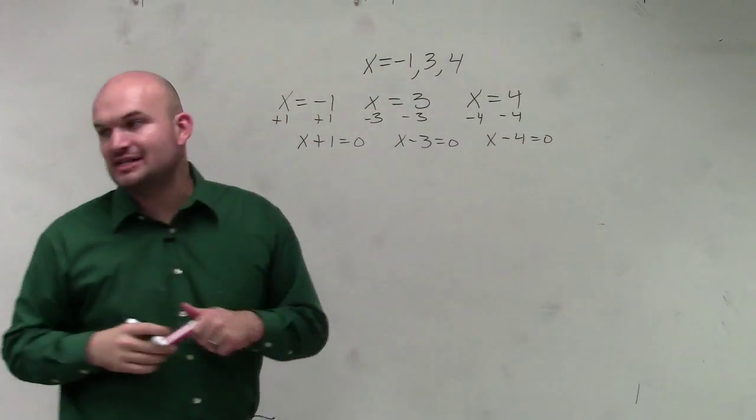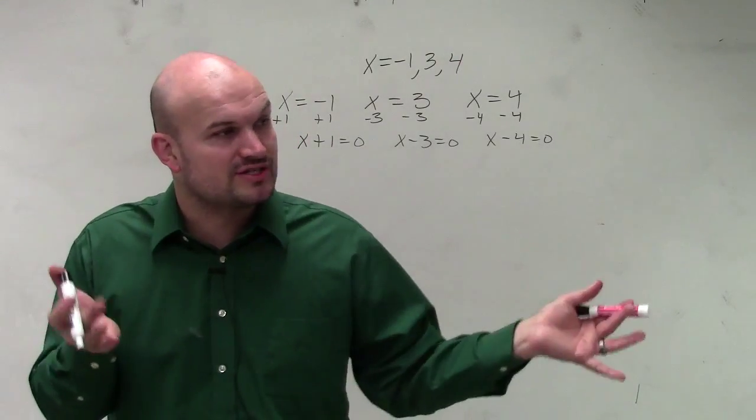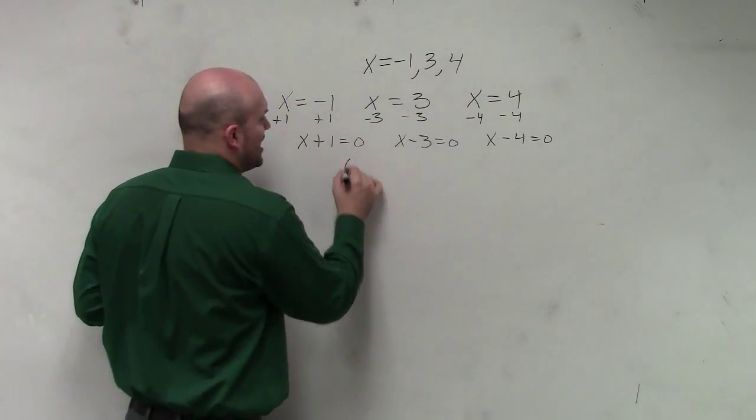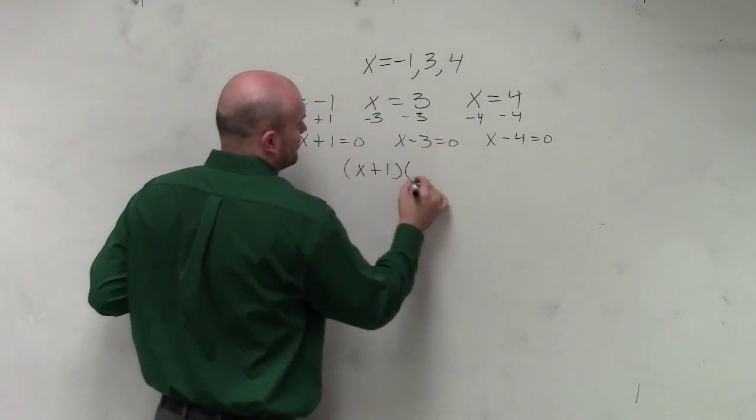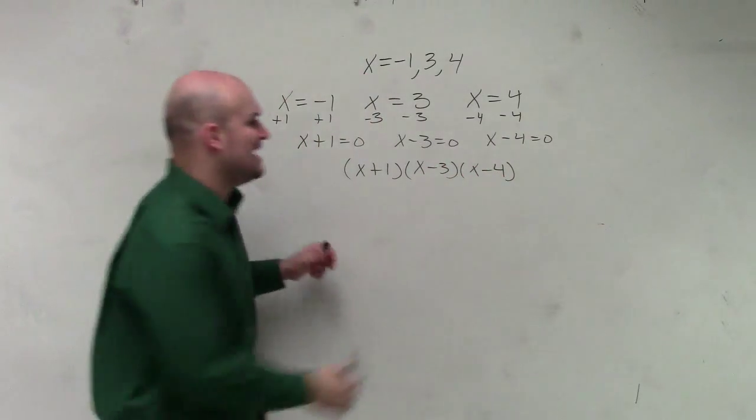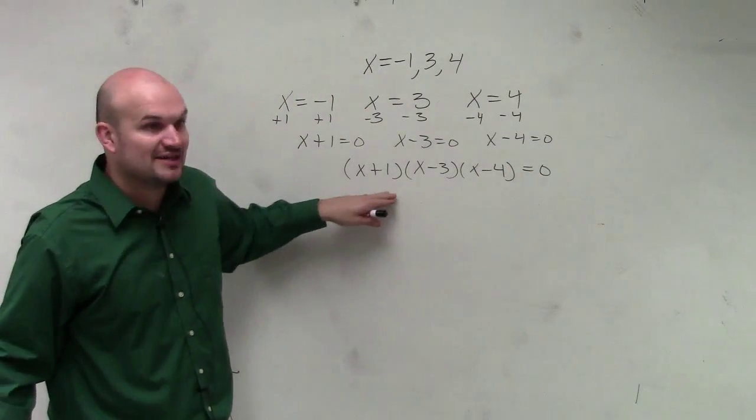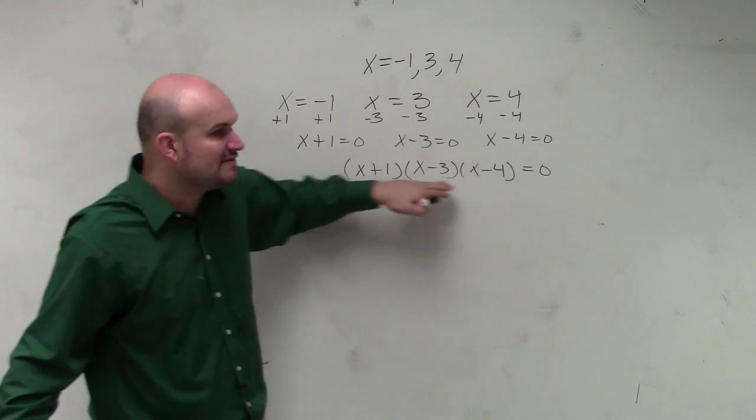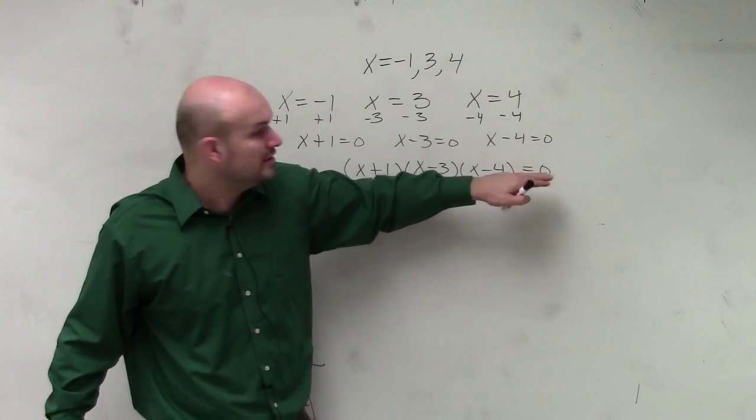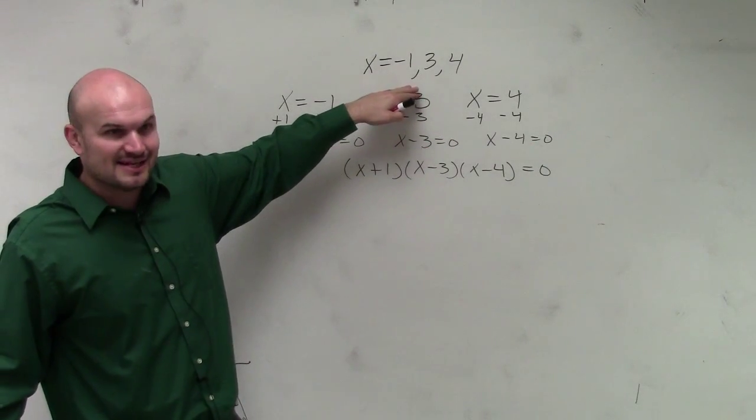The reason why we set each factor equal to 0 is basically just doing the zero product property in reverse. If we have factors equal to 0, then we can rewrite them as the product of factors equal to 0. Do you see how this is like working backwards? When you have a set of factors equal to 0, to find the zeros, you set each factor equal to 0 and then solve. That's how you get the solution.